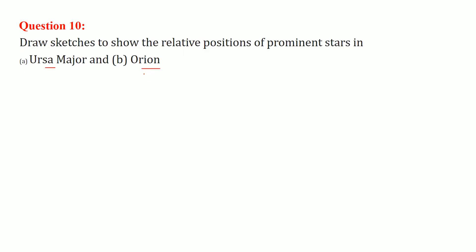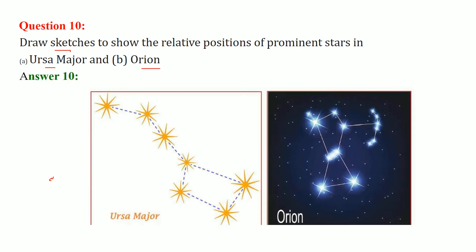Ursa Major and Orion. We have to draw a sketch to show the relative position of prominent stars. This is Ursa Major. It is like a spoon with depth. And this is like a man or person having a bow. So this is Ursa Major, this is Orion.